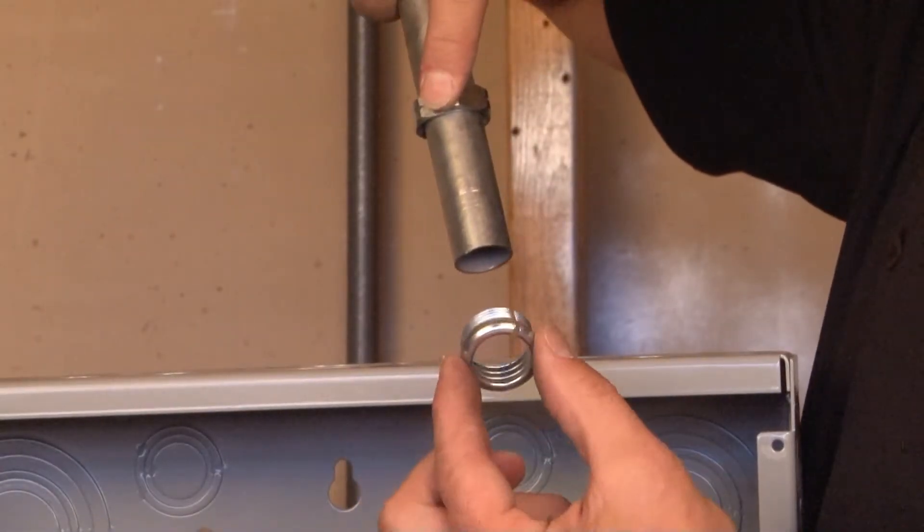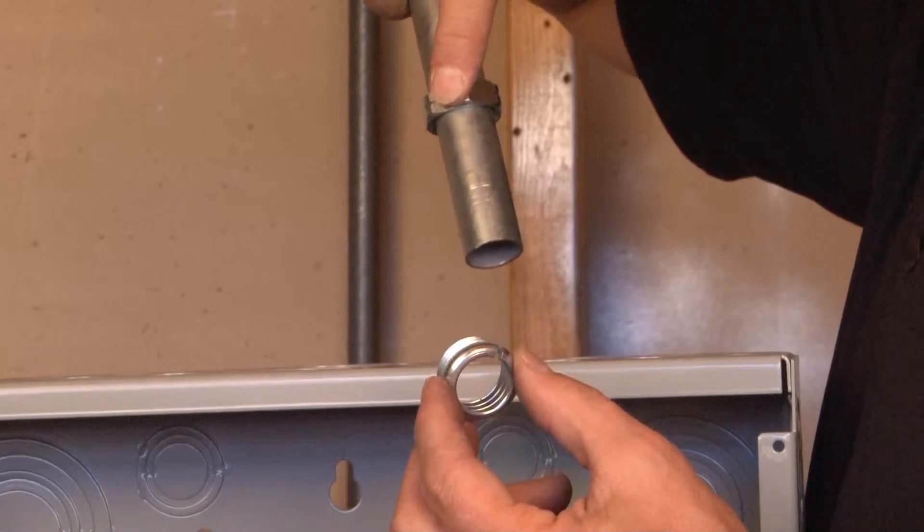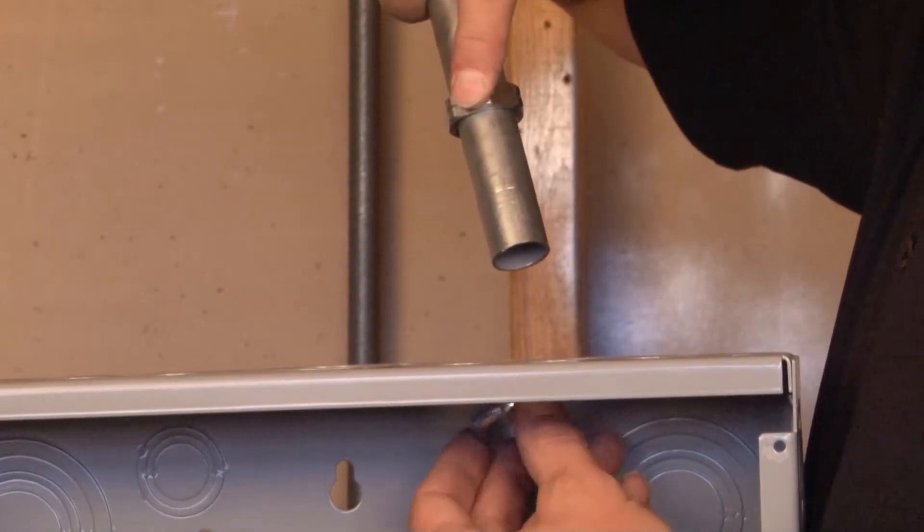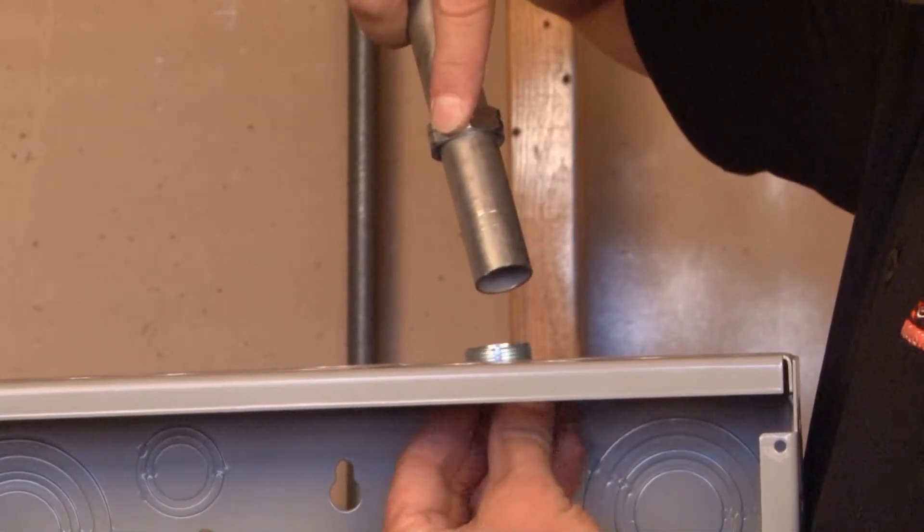The inner portion serves as both a lock nut and a compression connector by simply inserting it into the knockout hole that you've removed.